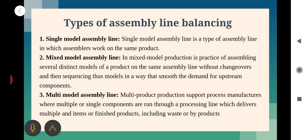In the Mixed Model Assembly Line, production is a practice of assembling several distinct models of products on the same assembly line without changeovers, and then sequencing these models in a way that smooths demand for upstream components.